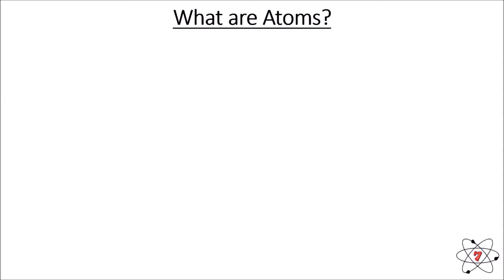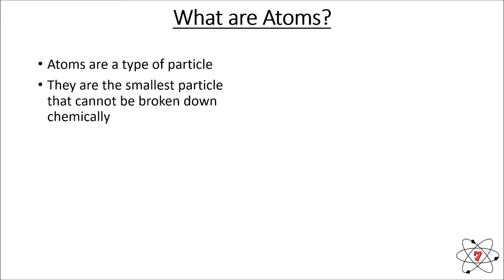The first thing that we need to ask ourselves is, what are atoms? In very simple terms, atoms are just types of particles. And we've already covered what particles are. It's important to note that atoms are the smallest type of particle that cannot be broken down by chemical means.